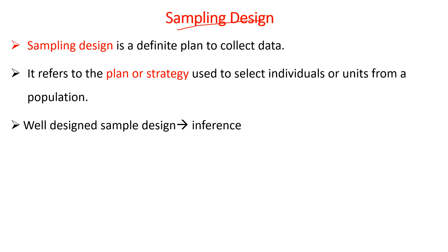Coming to sampling design: sampling design is a definite plan to collect data, or a strategy used to select individuals or units from the population. Before collecting data or taking a sample from the entire population, we have to prepare a well-designed sampling plan. Otherwise, the sample drawn from the population might not be representative. A well-designed sample helps the researcher to conclude or generalize about the population from the findings of the sample, if and only if the sampling design is proper.